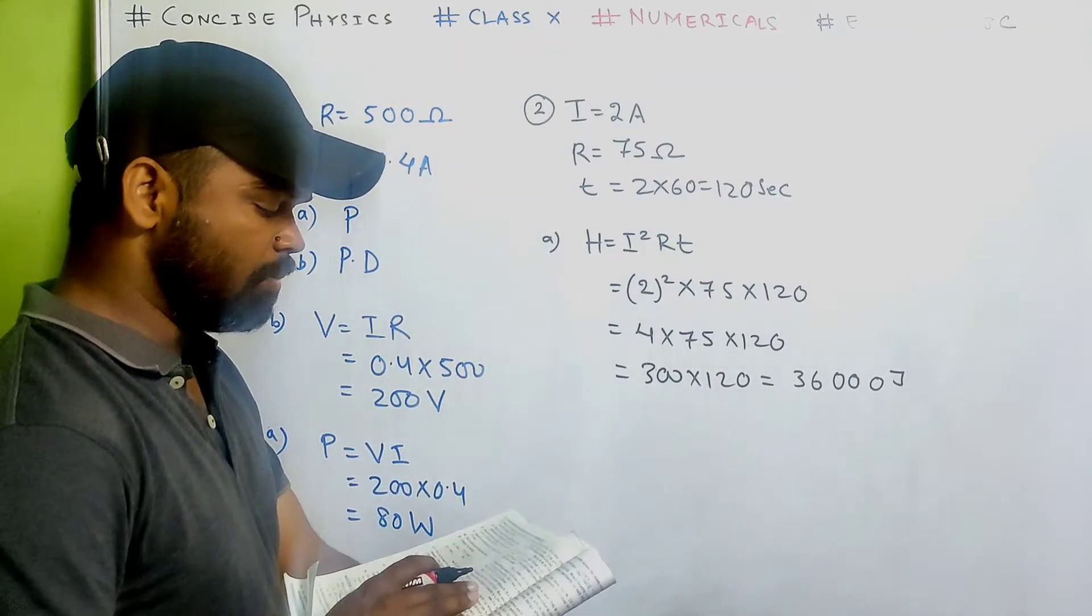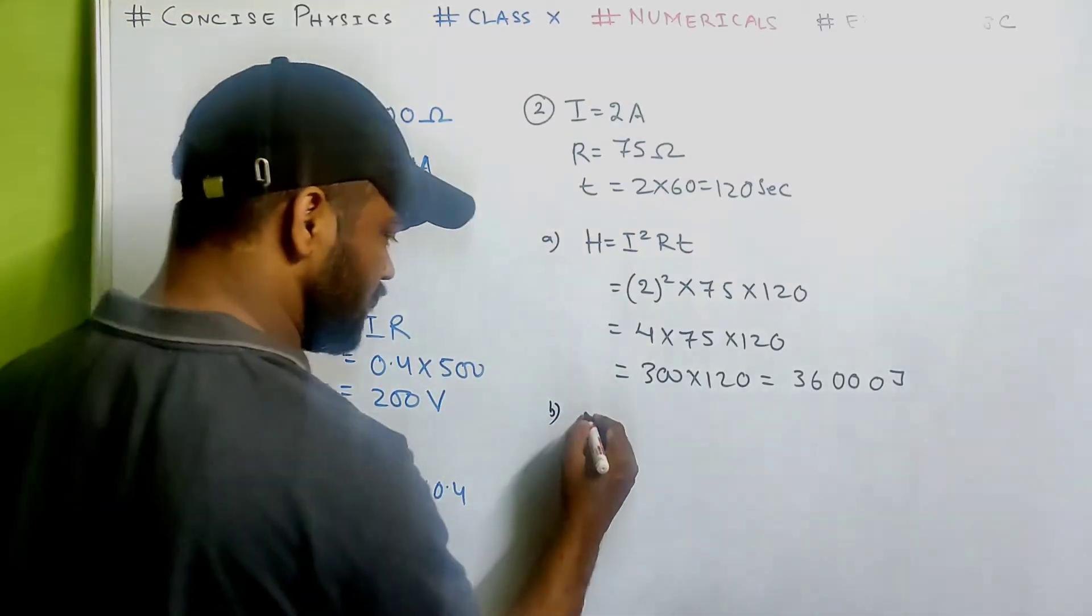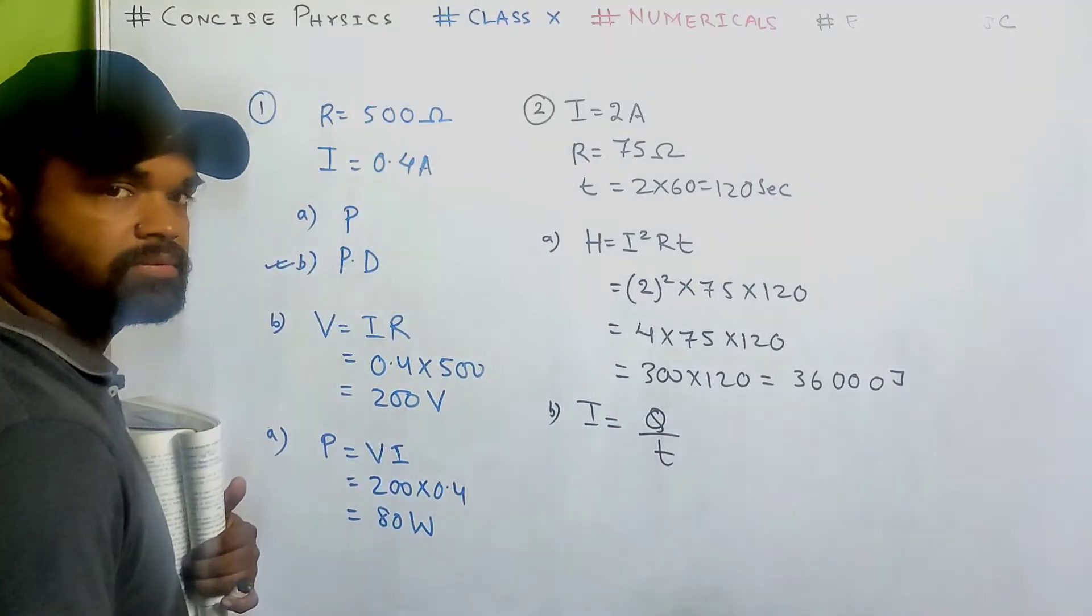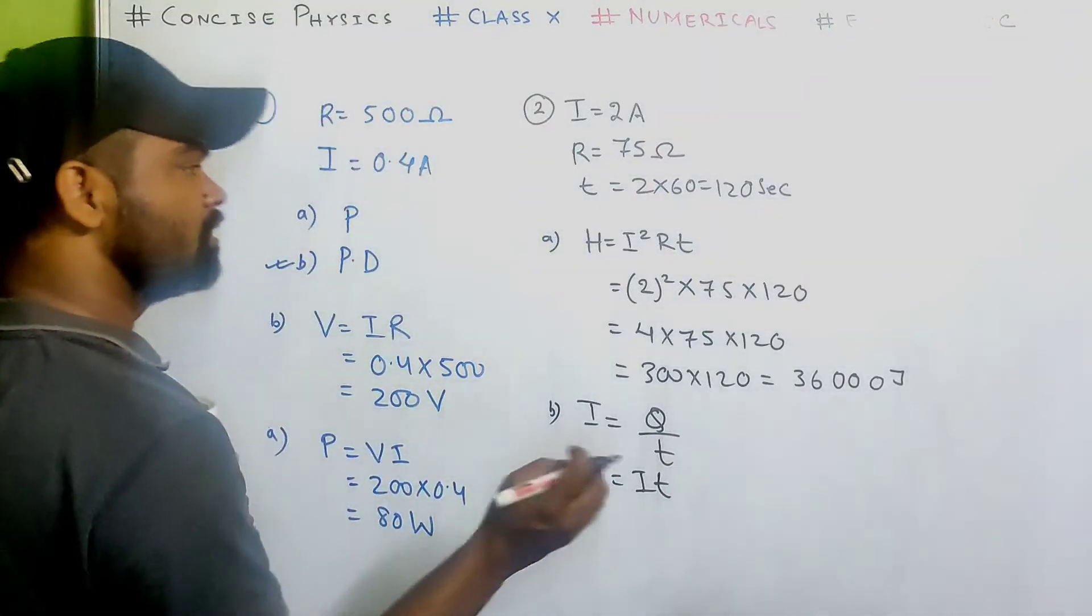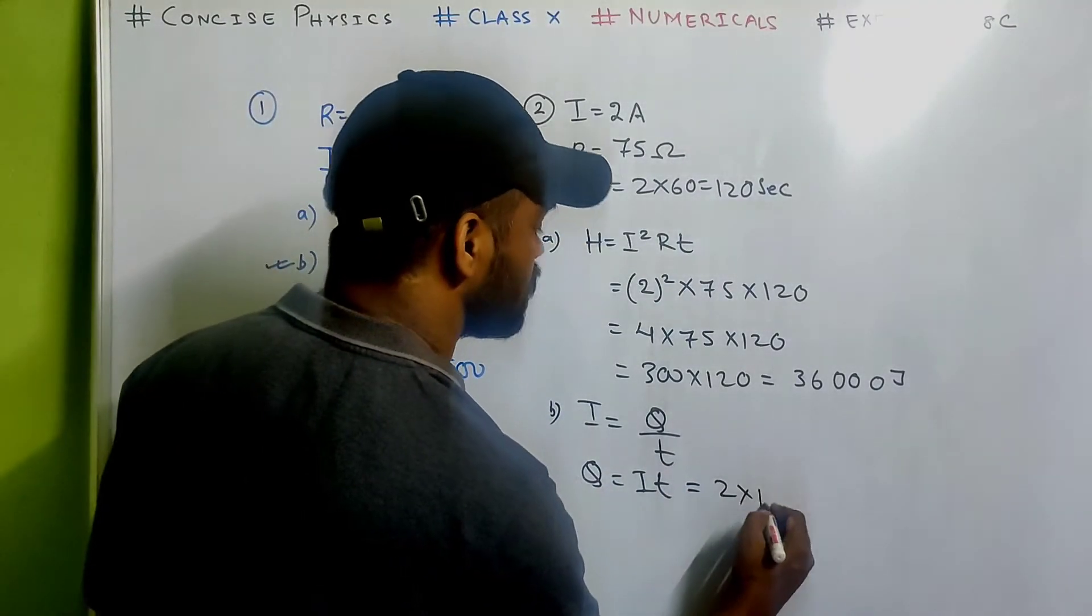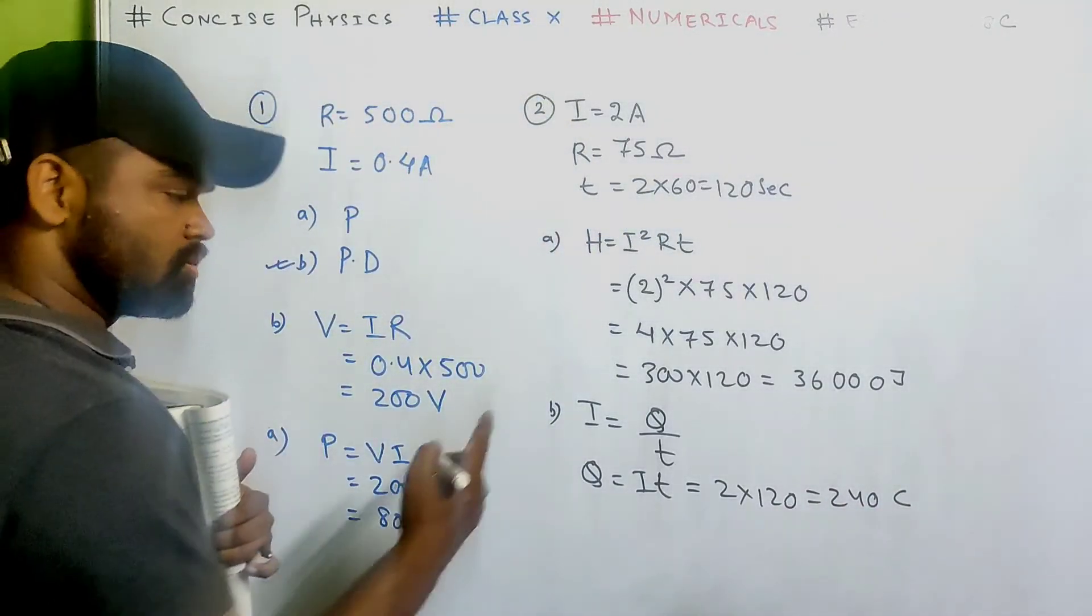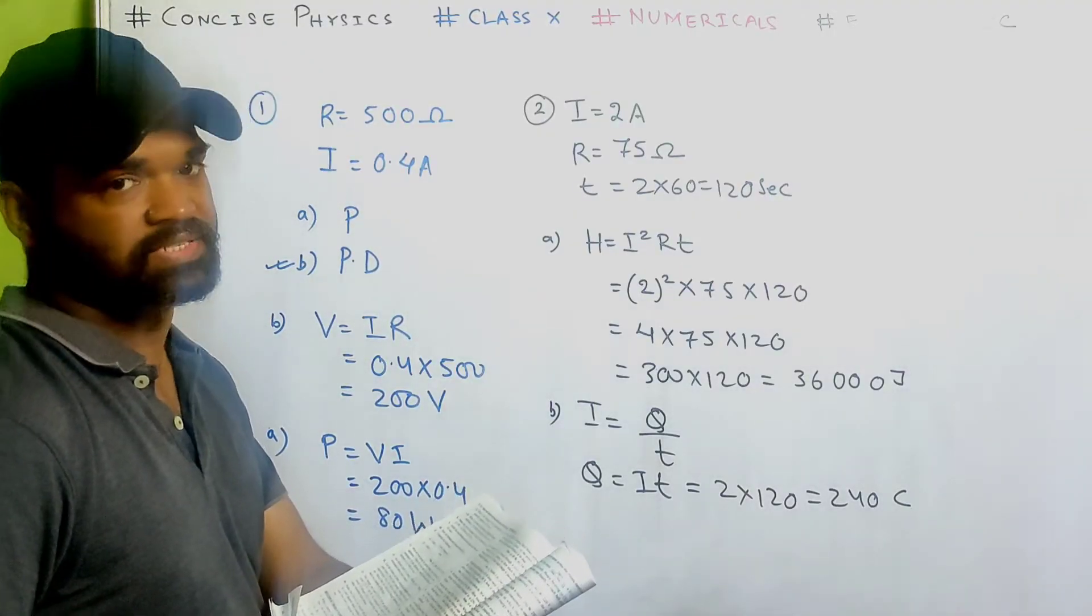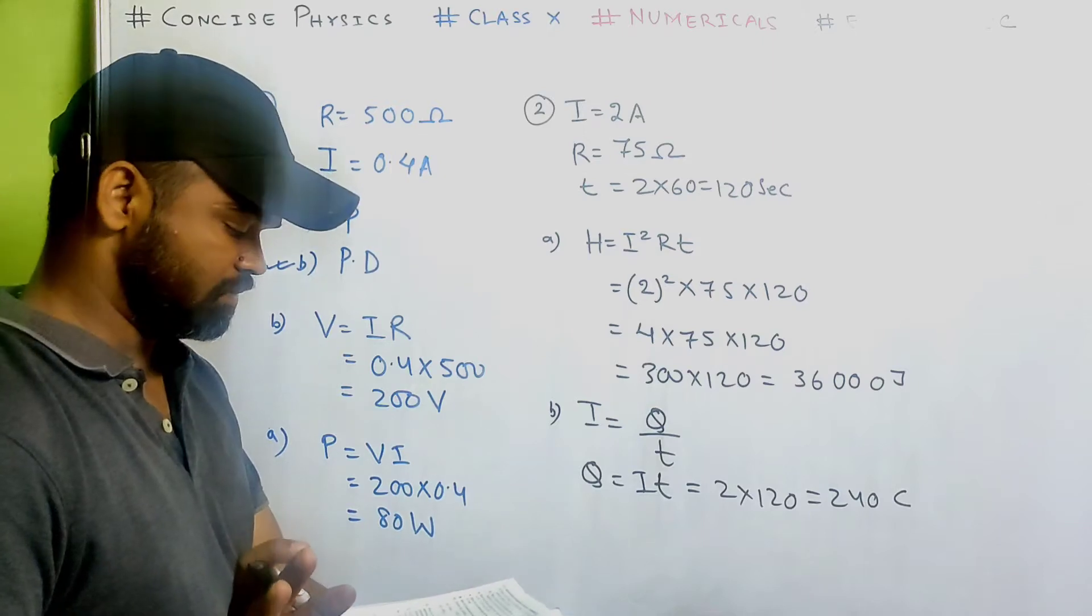Number b. How much charge is passed? Current was q by t, Q is the charge. So what is q? Q is i multiplied by t. Just solve it. i is 2 and t is 120. So that's 240 coulomb. So the charge is 240 coulomb which is passed through the resistance. Simple use of formula.